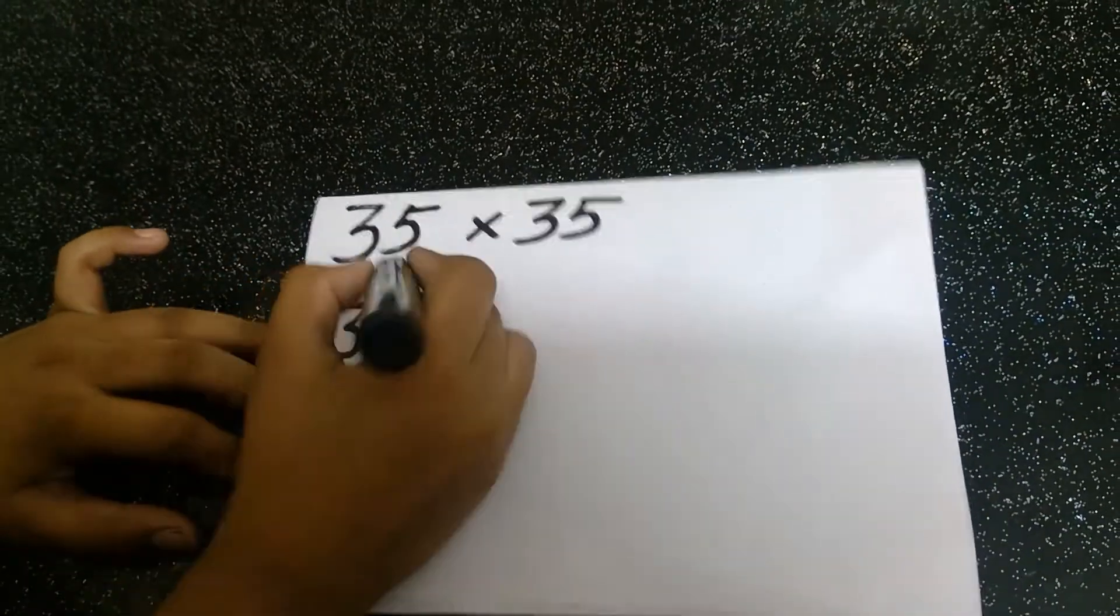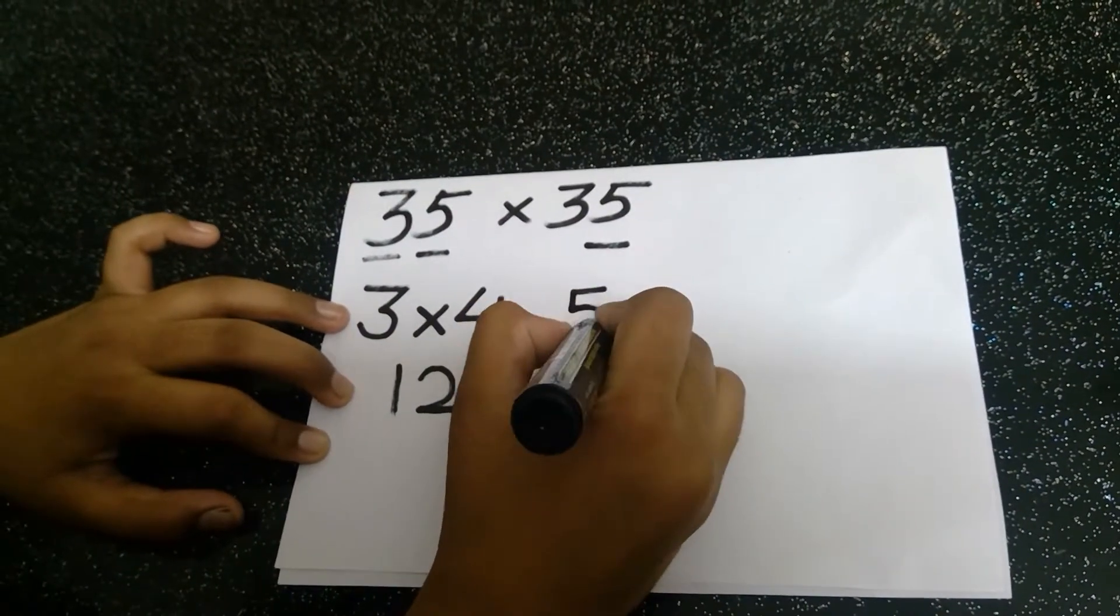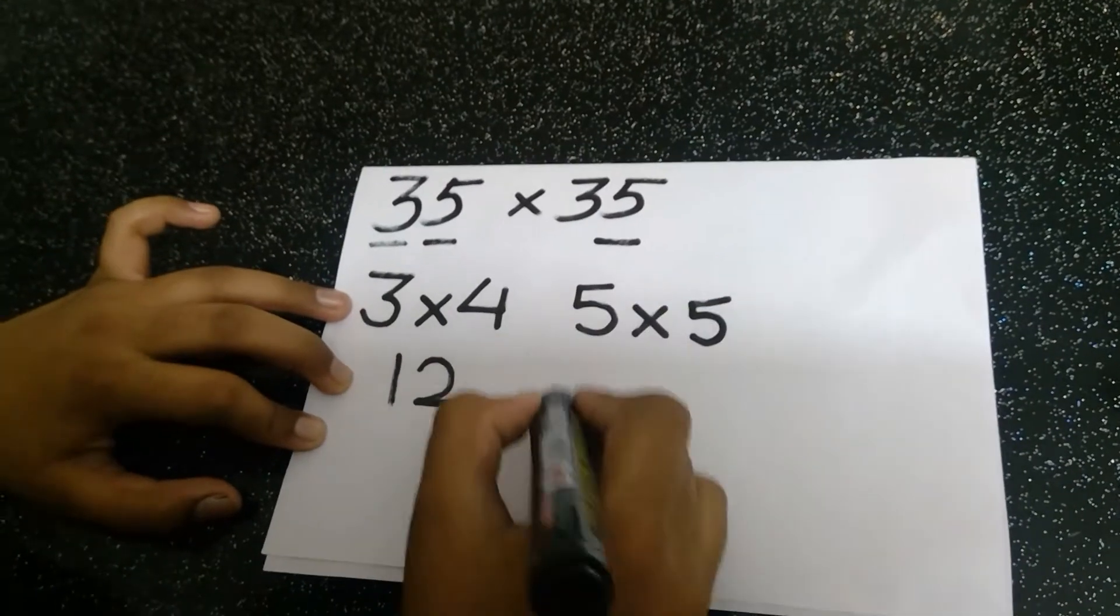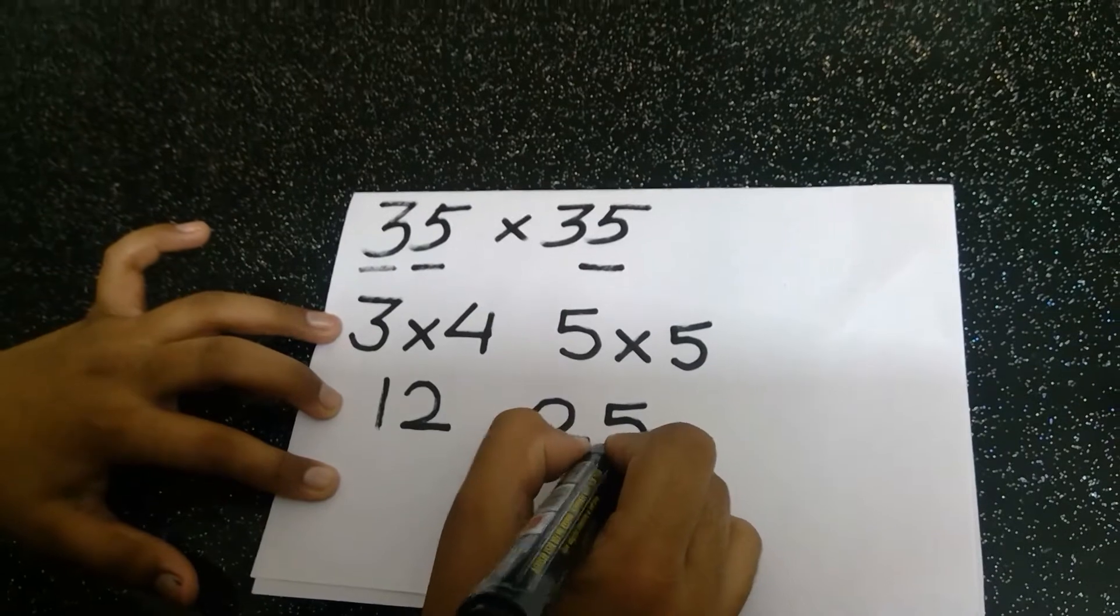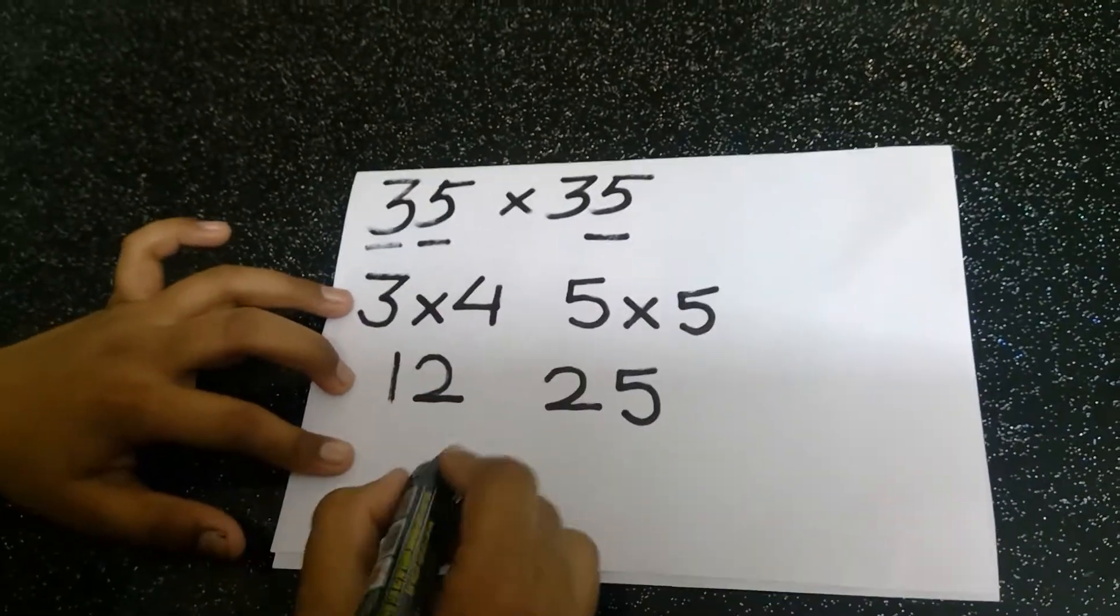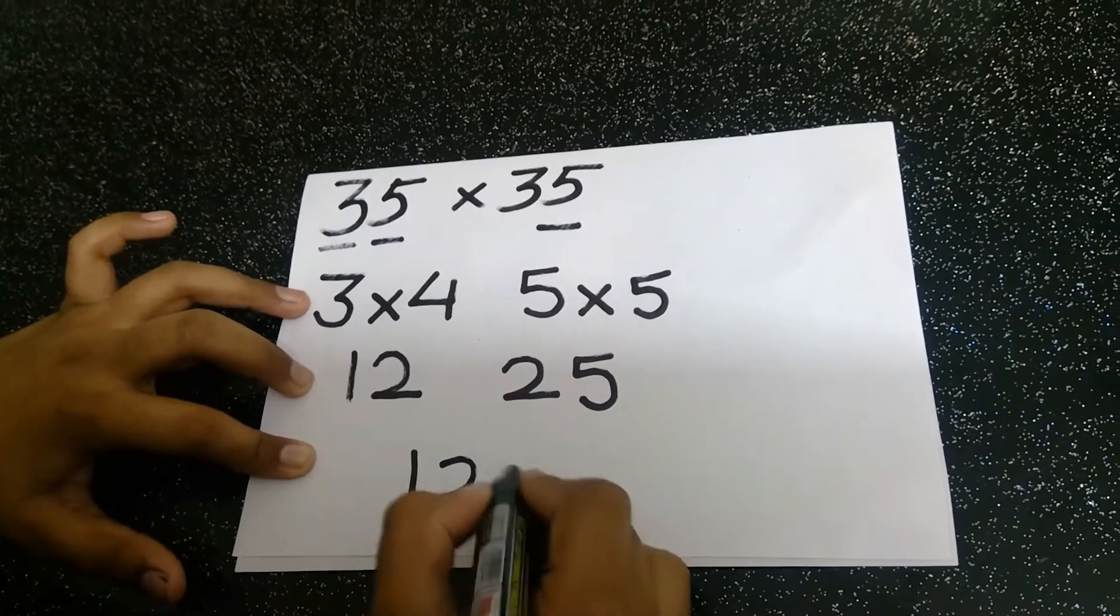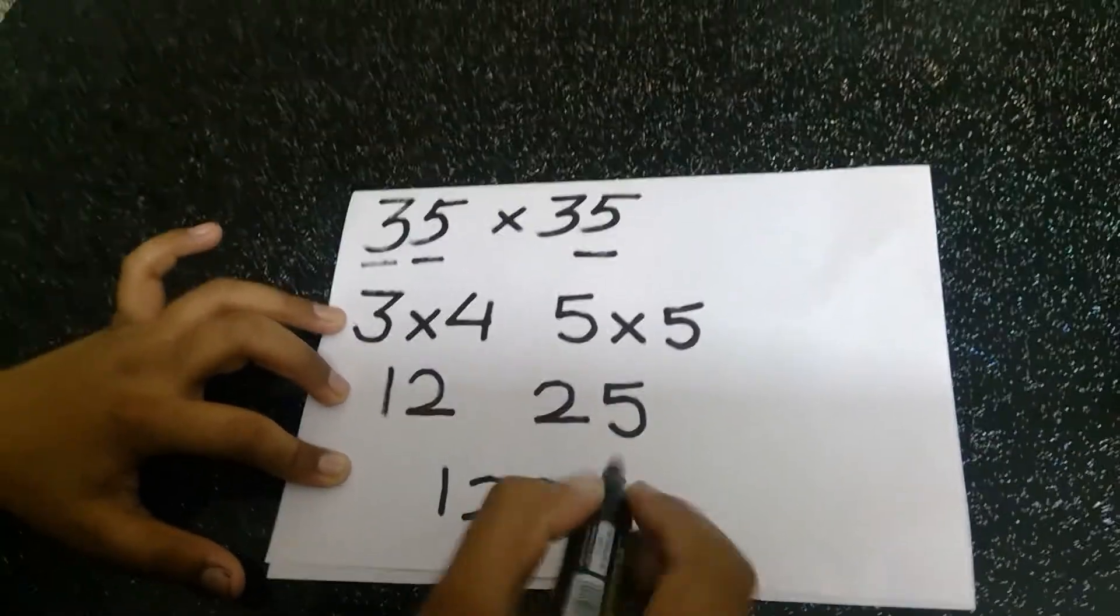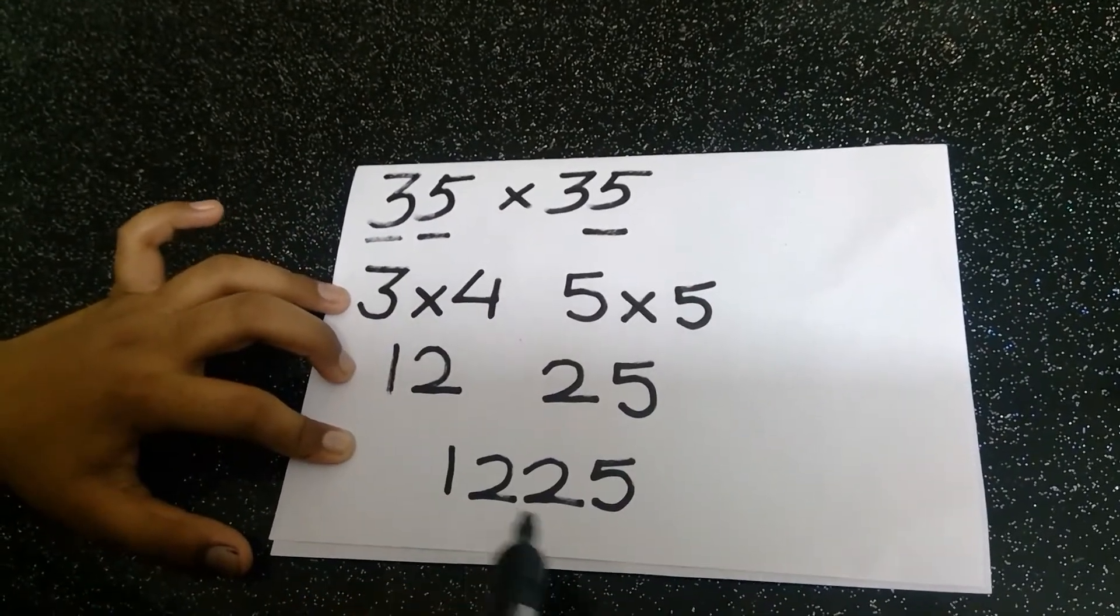Now we are going to multiply 5 and 5. 5 into 5 equals 25. Our answer is here. Our answer is 1225. So 35 into 35 equals 1225.